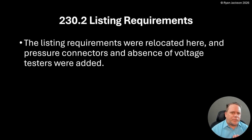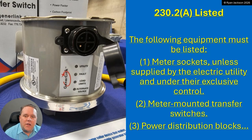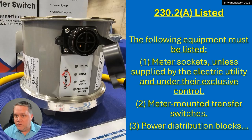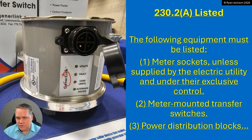Article 230, Section 230.2, Listing Requirements. The listing requirements were relocated here. In the 2026 NEC, they made two global changes to basically reserve the .2 section and the .3 section in every article. Articles are always whole numbers — Article 230, Article 406, Article 480. Sections are the decimals, so 230.2 is a section, 408.6 is a section. In almost all of the articles, the .2 section is reserved for listing requirements, and the .3 section is reserved for reconditioning requirements.